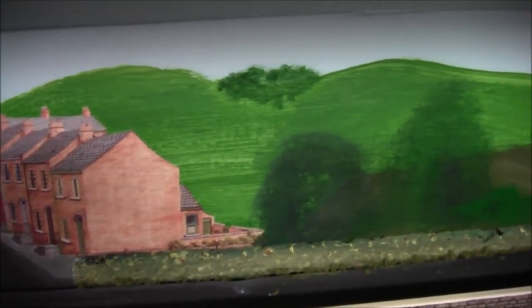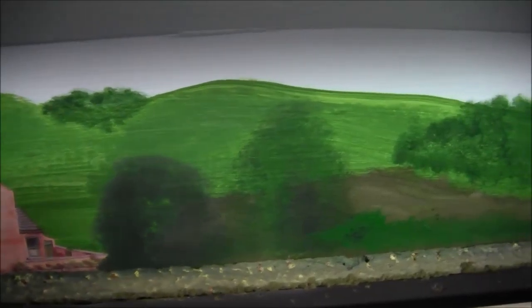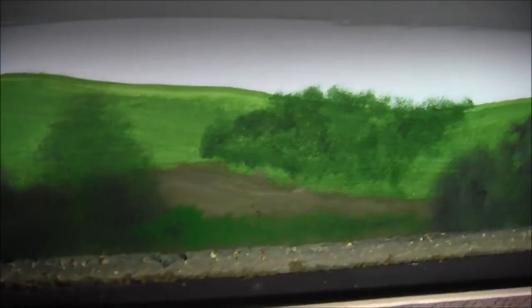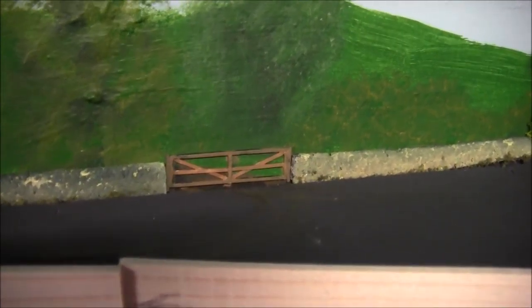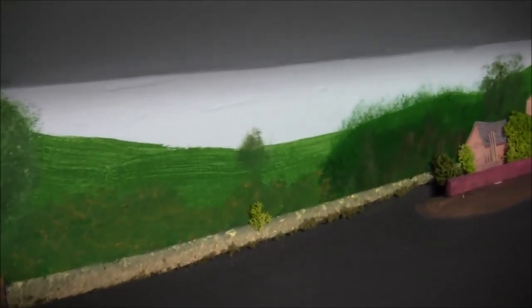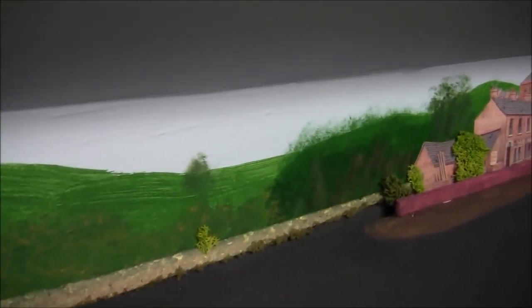Okay, I have glued the stone walling to the back of the scenic board now, and it's looking very effective. I have added a little farmer's gate in the middle there, which is made up from bits of old scrap plastic left over from kits. The wall continues all the way down to the back scene there where the houses are.